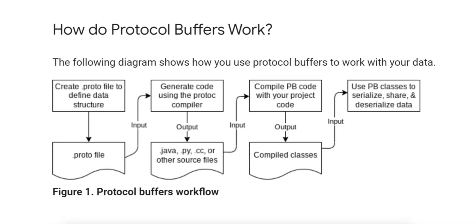Let's say we have a service that exchanges large amounts of structured data between microservices. Using JSON, each request and response contains verbose field names in string format, increasing the size of the payload. Processing each message requires parsing field names and values, leading to higher latency, especially at scale. Using protobuf, each request and response is compactly encoded in binary, minimizing the size and speeding up the processing of messages. The system benefits from strict type checking, ensuring that no invalid data is sent across services.